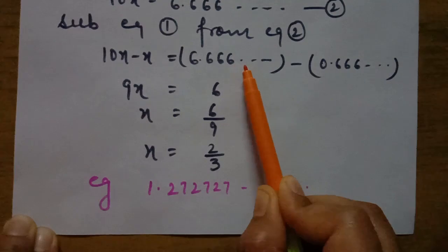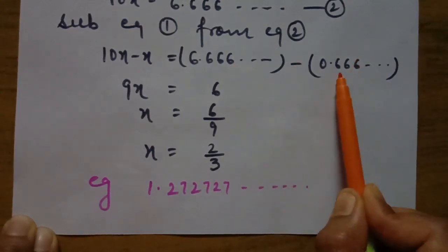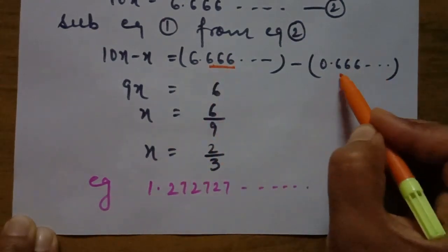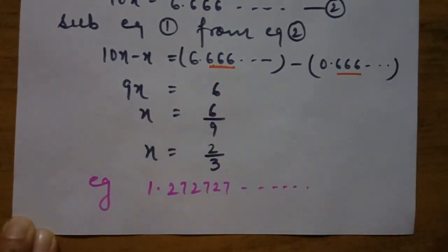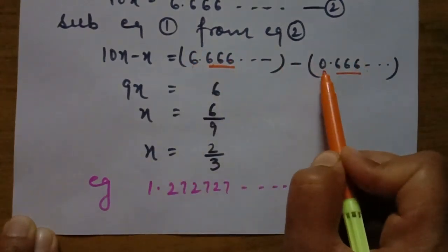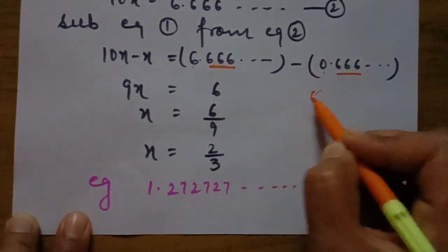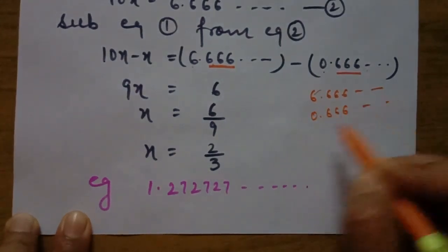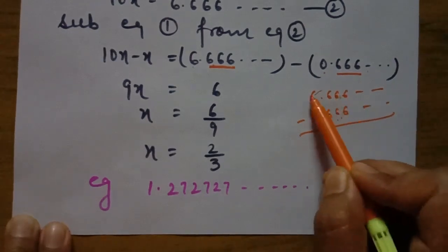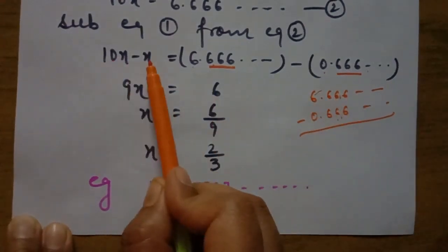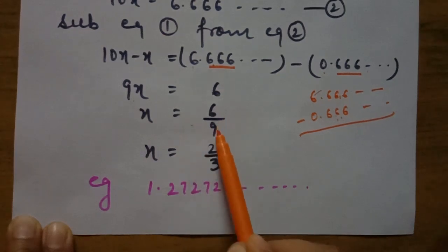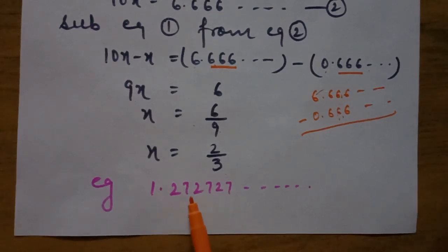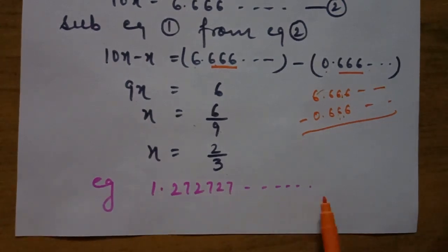Subtract equation one from equation two: 10x − x = 6.666... − 0.666... After the decimal we have infinite 6s on both sides — they cancel each other. So 9x = 6, which gives x = 6/9 = 2/3.